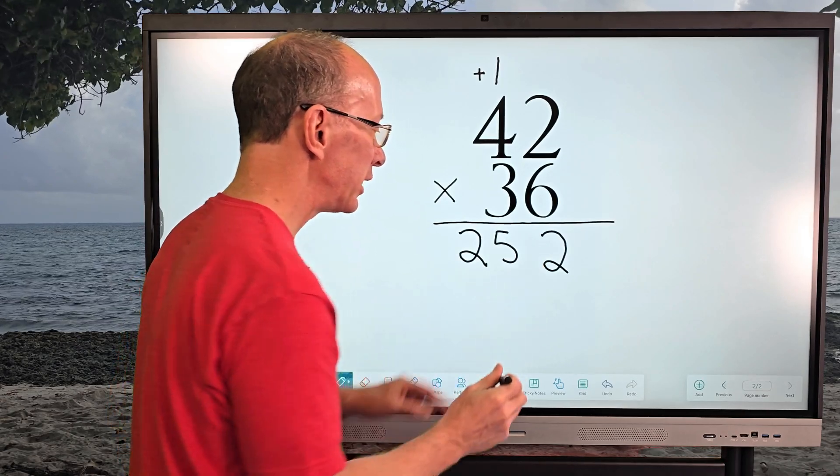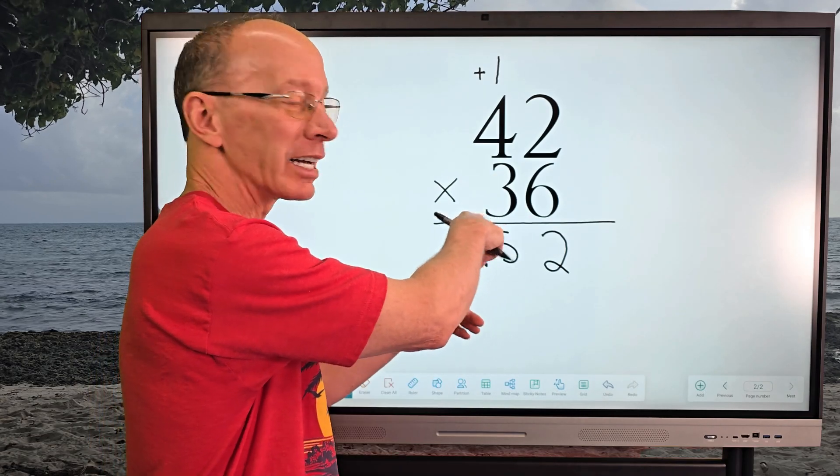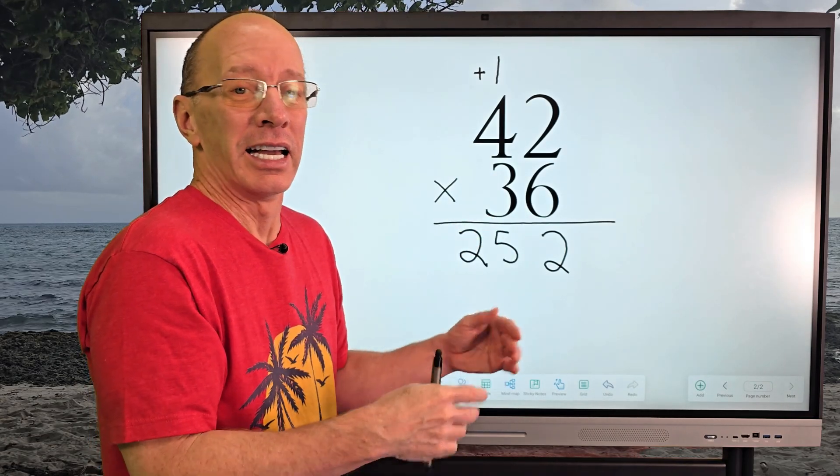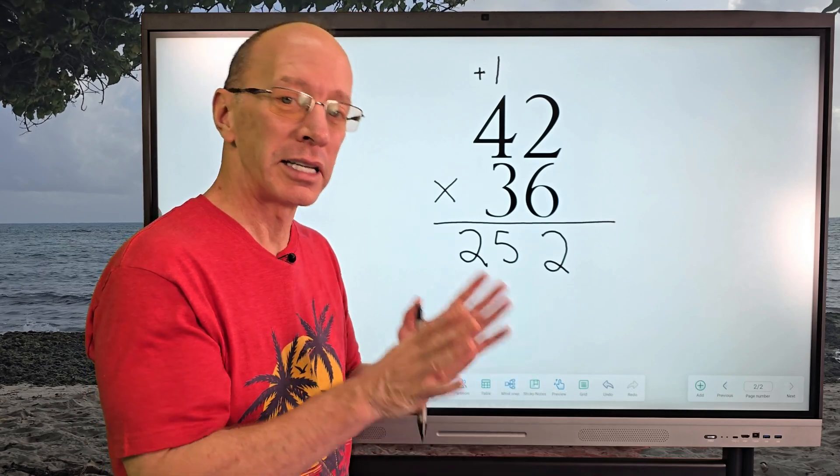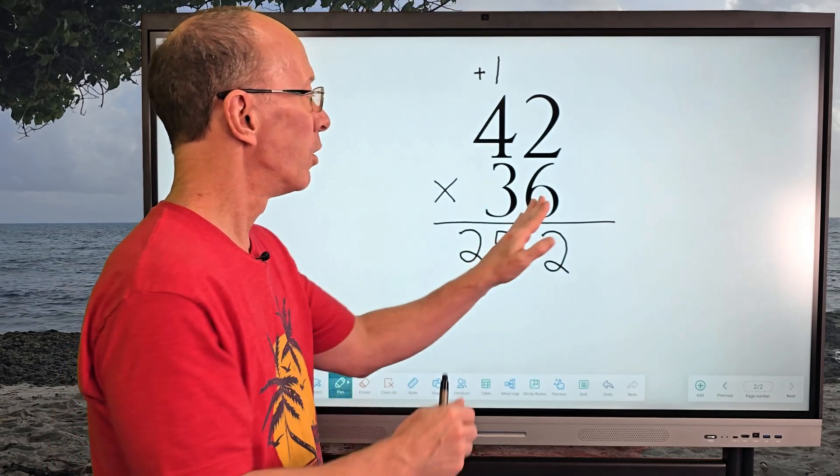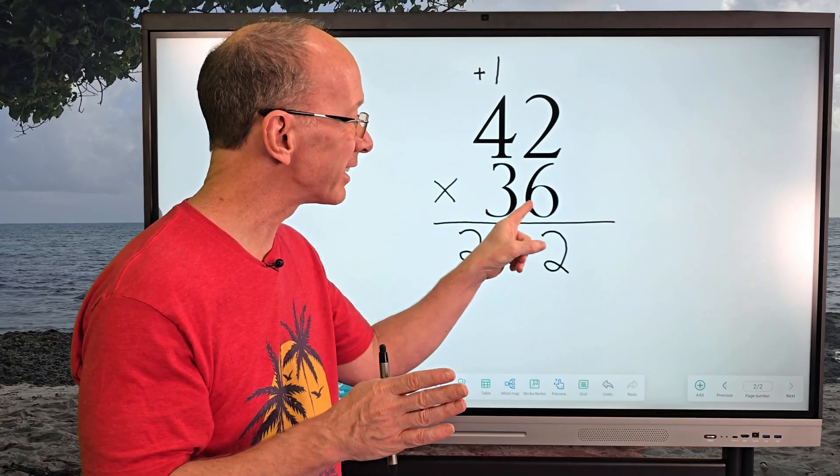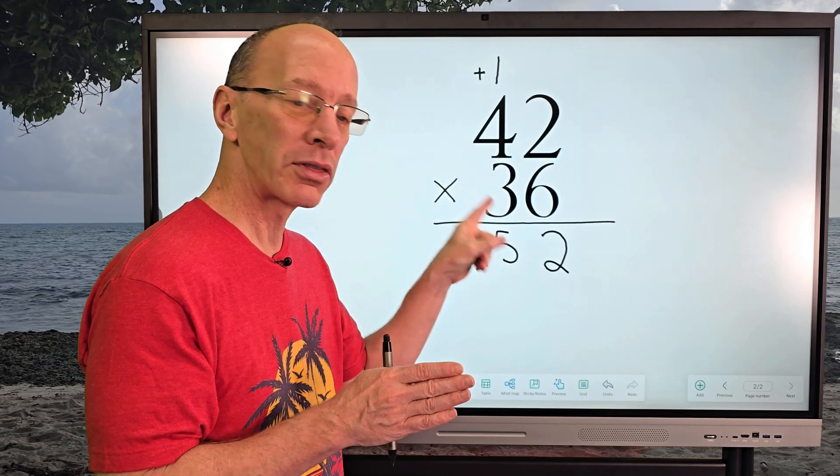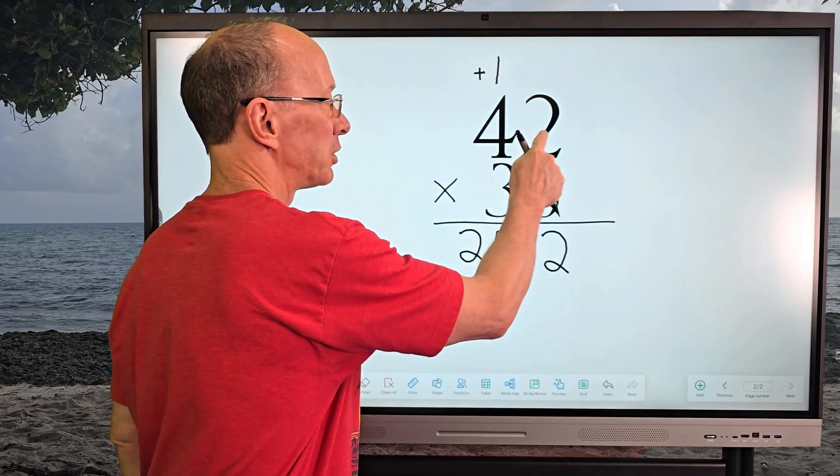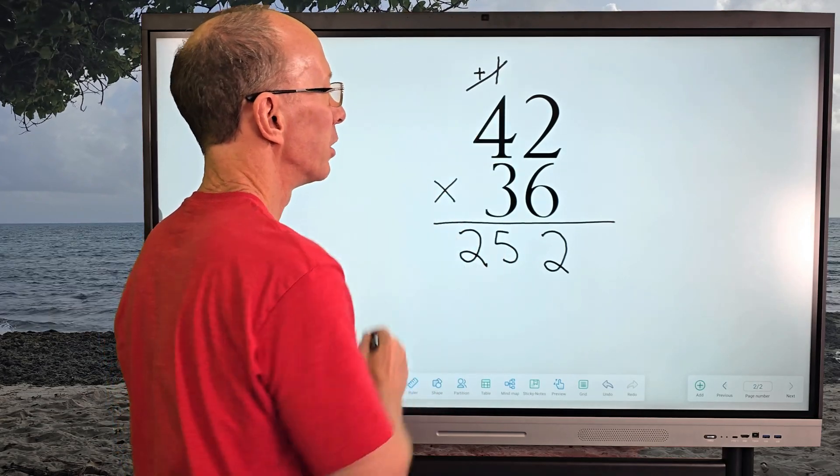When you write your numbers, please write them neatly. Otherwise, when we start adding on a couple more numbers for multiplication, it's going to get all jumbled around. So please always be organized with your numbers. All right. So now we've finished multiplying with the six. Now we're going to multiply with the three. We're going to take three times two and then three times four. Okay. And we're done using this number up here.